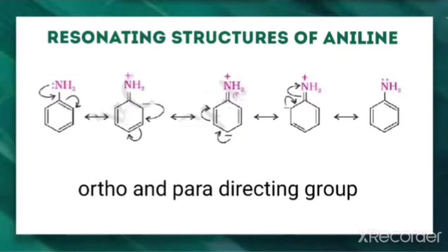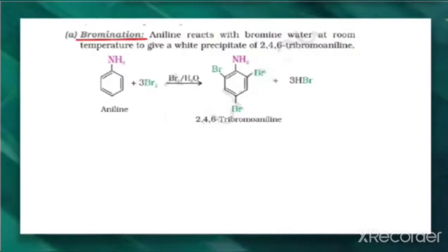Let us discuss the electrophilic substitution reactions for aniline. First one is bromination. Aniline reacts with bromine water at room temperature to give a white precipitate of 2,4,6-tribromoaniline.